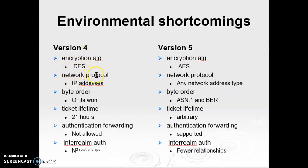Regarding network protocol dependence: version 4 requires the use of IP addresses only, and other address types such as ISO network addresses are not supported. In version 5, any network address type can be supported, as addresses are tagged with type and length.